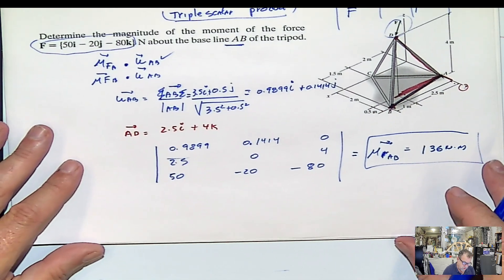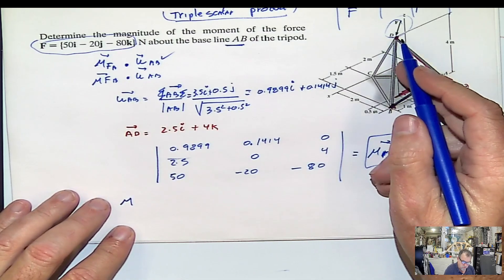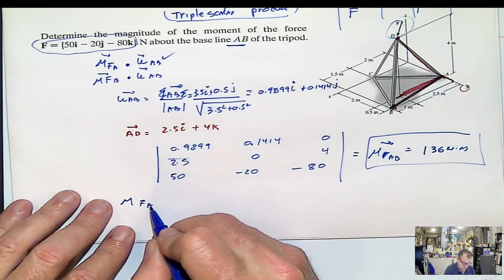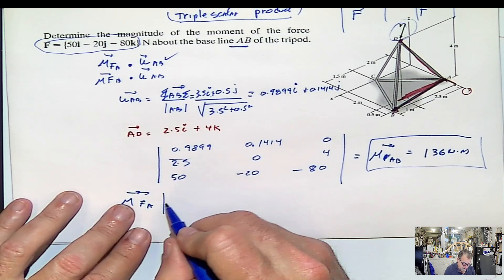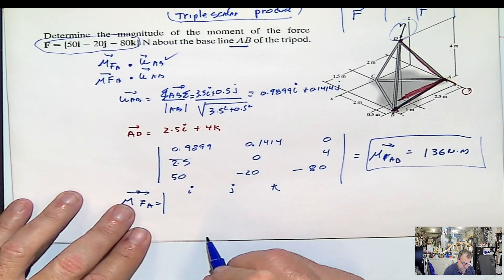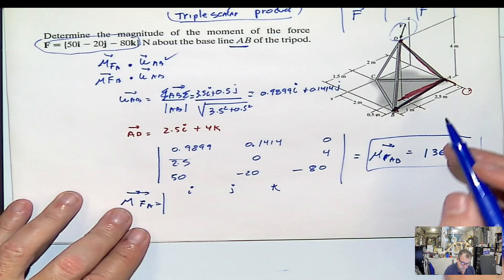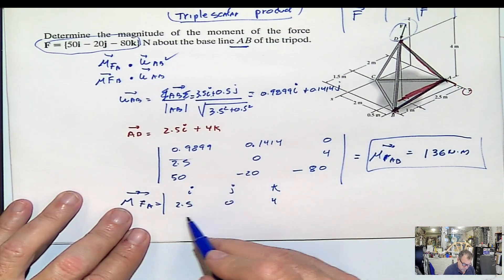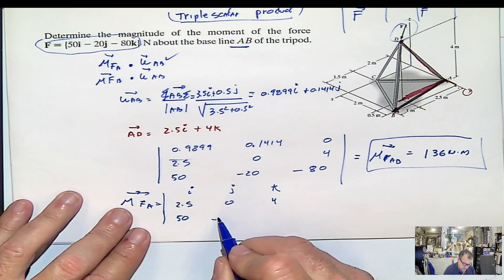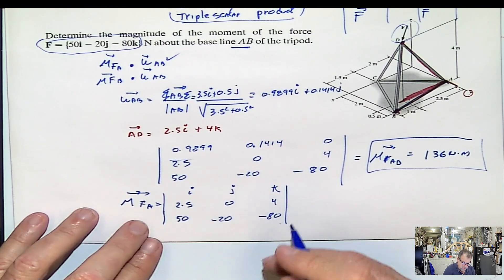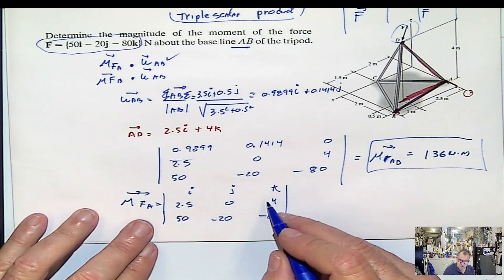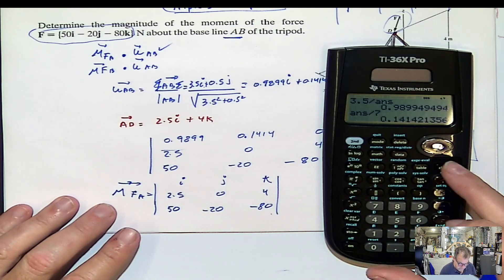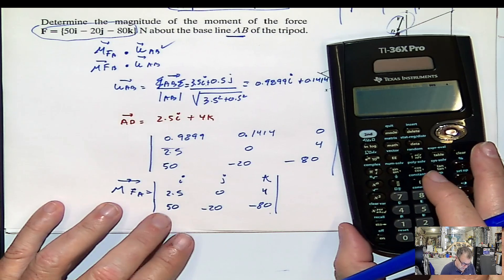The other thing that we could have done here is just find first the moment of the force F with respect to any point in the line AB, for example, the point A. We could have done that. How do you do that? By doing the determinant I, J, K. And then you could put what? The R first, where is that R? AD. We have AD, 2.5, 0, 4. And then you put the force here, 50, negative 20, negative 80. And then you get this moment. And then once you get this moment, we can do it. I mean, I have time. But you guys are always hurrying. I mean, shorter video, shorter video, shorter video. OK, let's do it. I don't care.